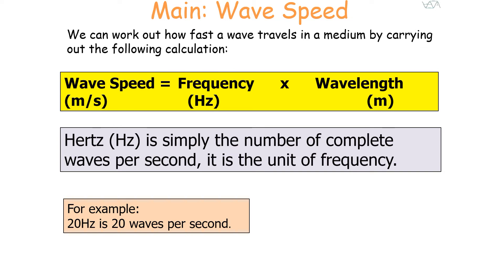It's important to know that frequency is given in the units of hertz, because hertz is the number of complete waves per second. For example, if you have a frequency of 20 hertz, it means there are 20 waves passing a point every single second.